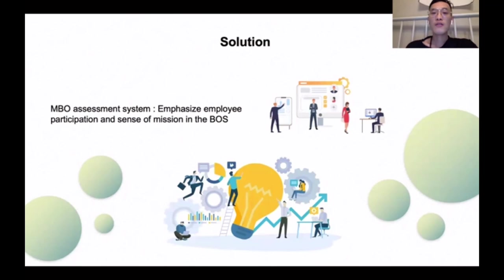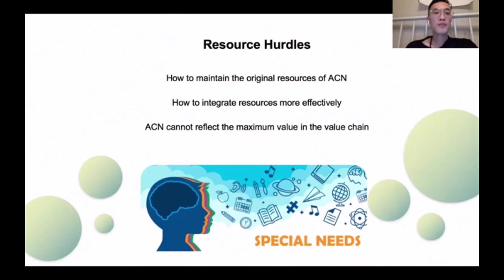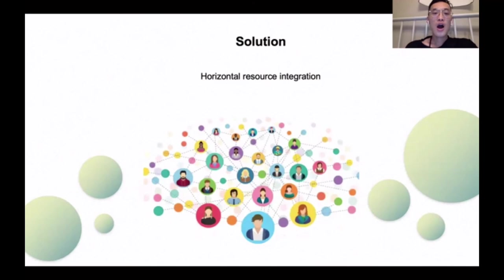The second hurdle is limited resources. It is believed that the greater the strategic change, the more resources are needed. ACN is not in the most advantageous position compared to more professional autism organizations, as it does not reflect its greatest value in service. So companies should focus on the links in the value chain and form new links by integrating resources.